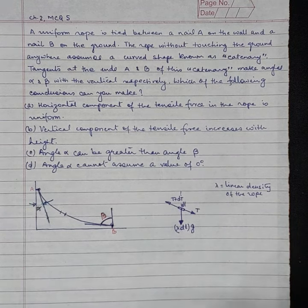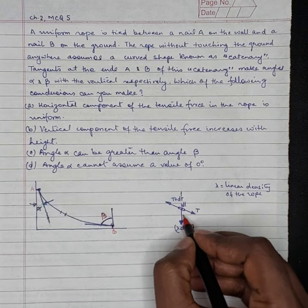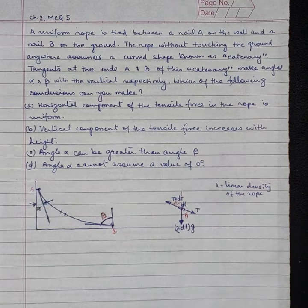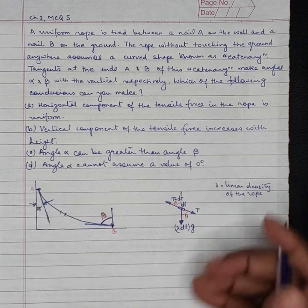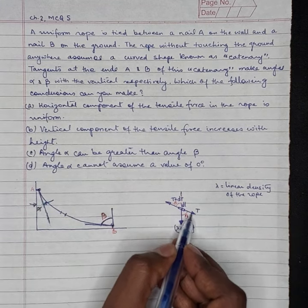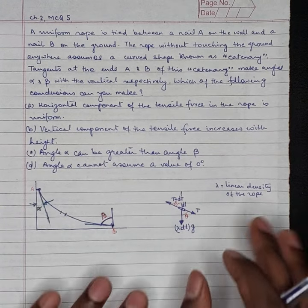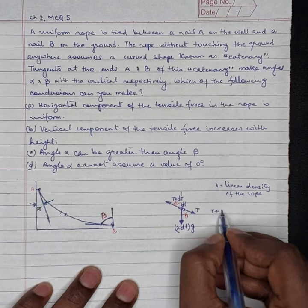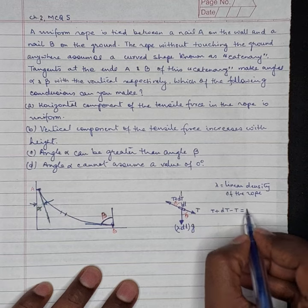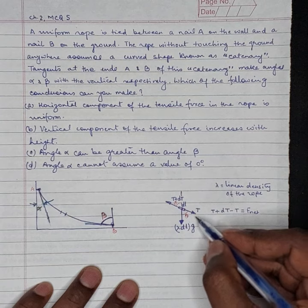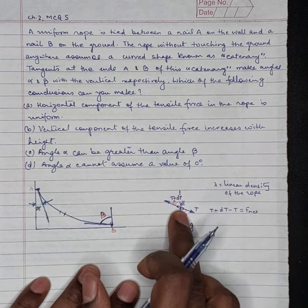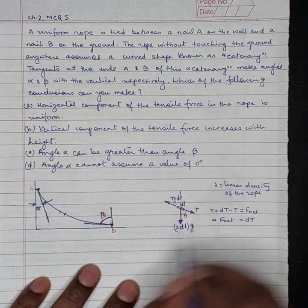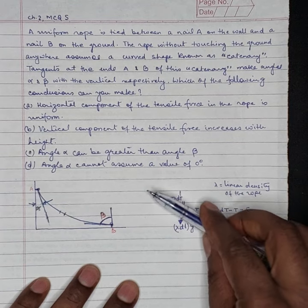Let us say that this dL section is making angle theta with the vertical. So this angle will also be theta. So net force along the rope will be, if you can see from the diagram, T plus dT minus T will be F net along the section of dL section of the rope.